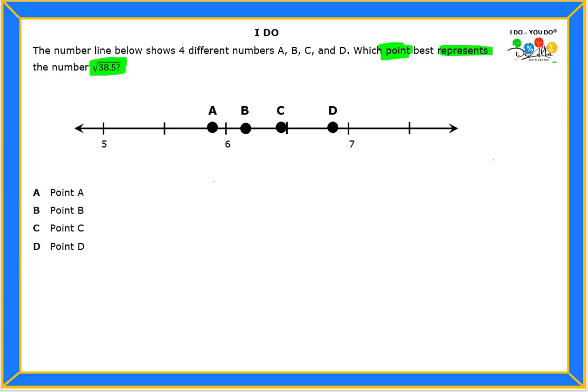is of course get the calculator so that we can find the value for the square root of 38.5. Okay, and if you go ahead and do that, we're gonna get something like, what do you guys get? A lot of numbers, right? Yes, because this is not a perfect square.